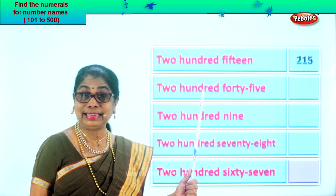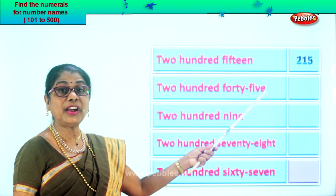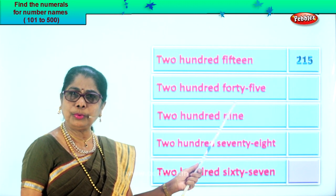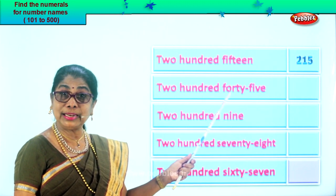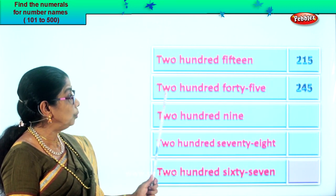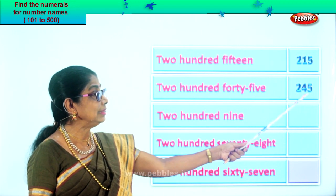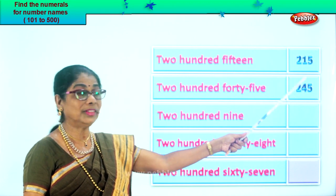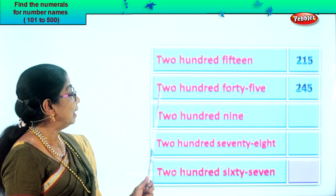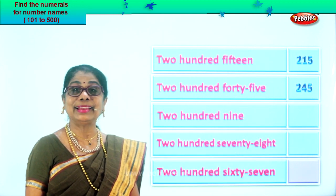Let's take the next number name: two hundred forty-five. Two in the hundredth place, forty-five — four in the tens place, five in the ones place. So you put two, four, five. Read this: two hundred forty-five. The number name: two hundred forty-five. Isn't it easy? Are you enjoying it?